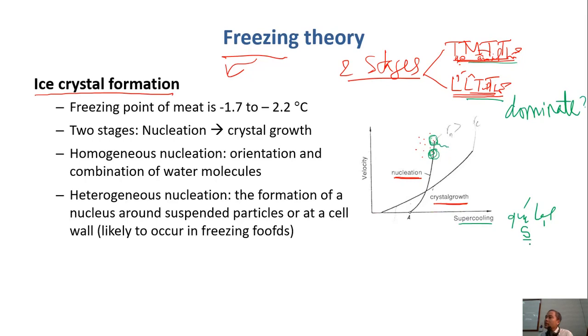Supercooling means that it's actually the freezing rate. If you do fast freezing, then you have higher supercooling. If you do slowly, then you have lower supercooling. Now, the velocity means the rate, the tốc độ, of these two processes here. When you do slow freezing, somewhere maybe here, which process occurs at higher rate, higher velocity? Crystal growth.